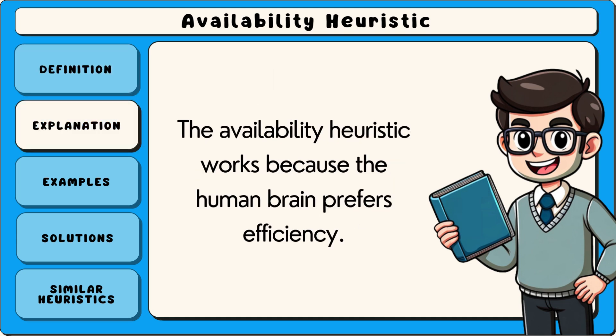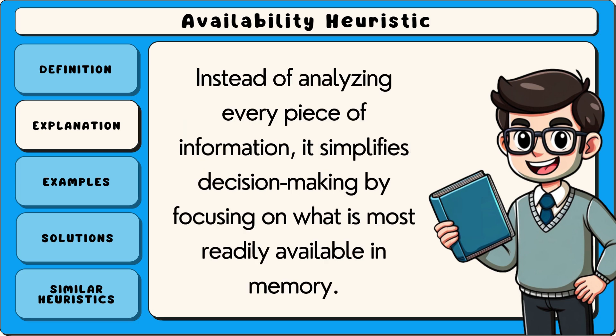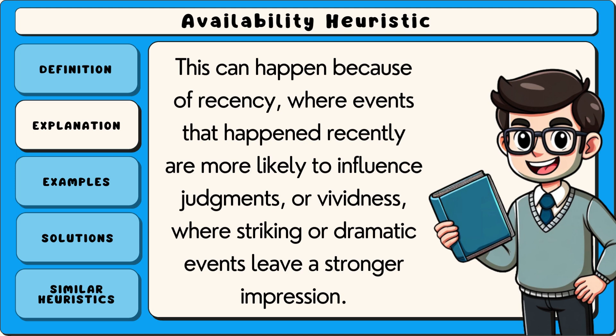The availability heuristic works because the human brain prefers efficiency. Instead of analysing every piece of information, it simplifies decision making by focusing on what is most readily available in memory. This can happen because of recency, where events that happened recently are more likely to influence judgements, or vividness, where striking or dramatic events leave a stronger impression.